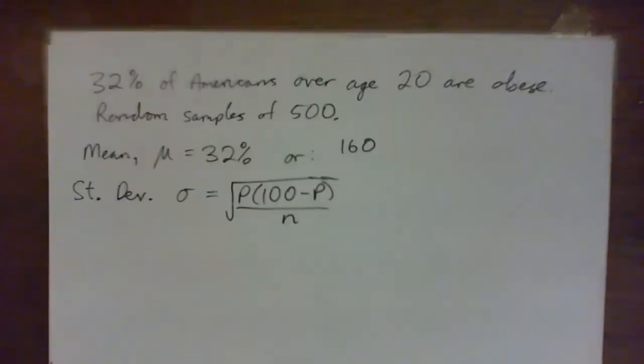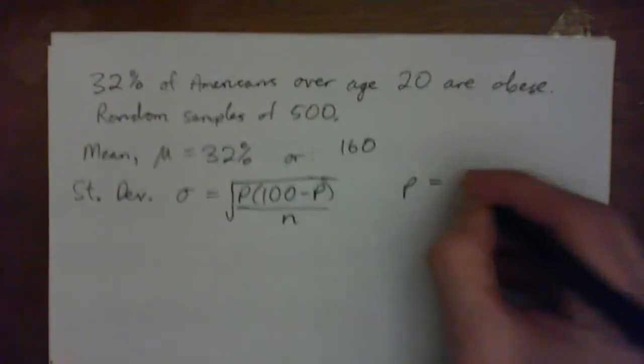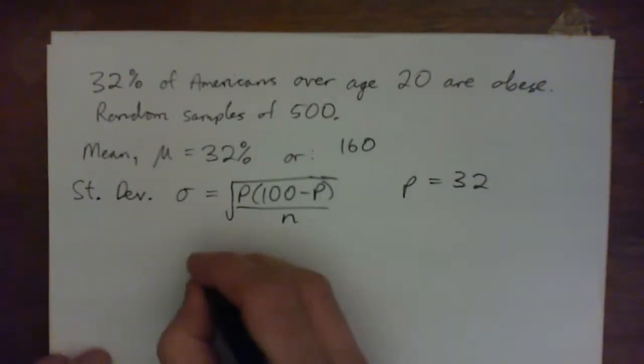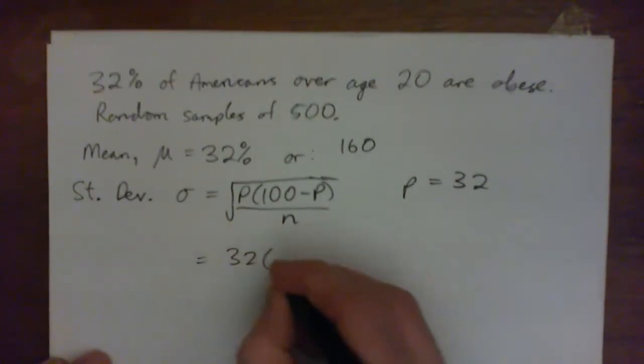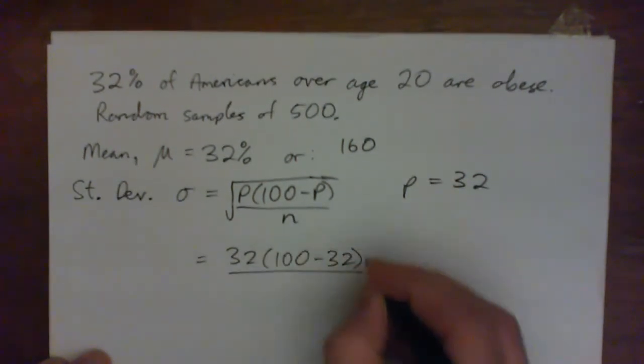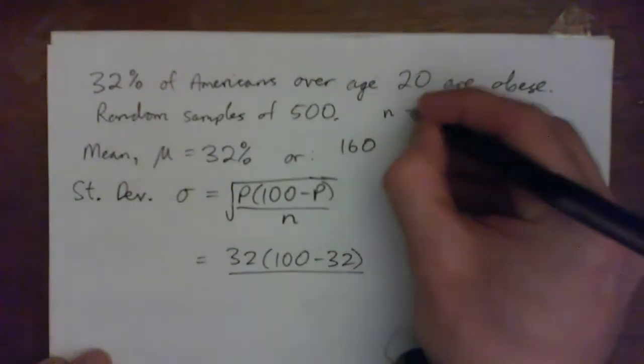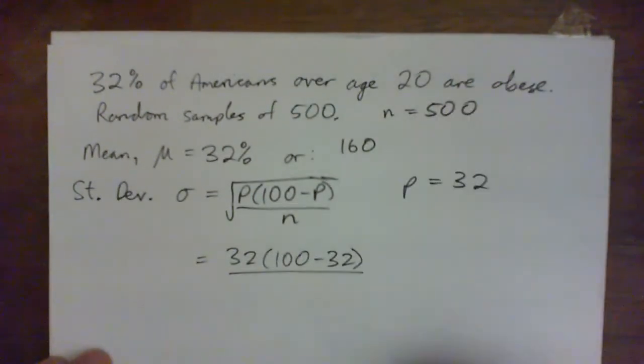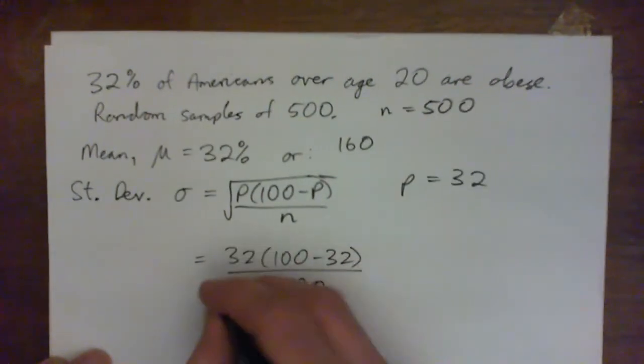So it's this formula here from your book. It's square root of P times 100 minus P all over N, where P is the mean percentage. So in our case, our P is going to be 32.